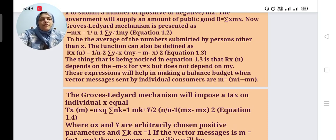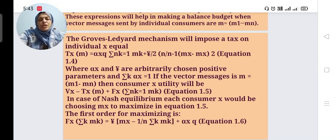Then Groves-Ledyard mechanism will impose tax on individual x that is equal to tx. tx(m) = αx·q·Σ(k=1 to n)mk + γ/2 × n/(n-1) × (mx - m̄(-x))², equation 1.4, where αx and γ are arbitrarily chosen positive parameters and Σk αx.